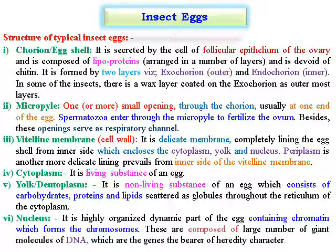The micropyle is a small opening through the chorion, usually at one end of the egg. Spermatozoa enter through the micropyle to fertilize the ovum; besides this, the opening also serves as a respiratory channel to the embryo. The vitelline membrane, that is the cell wall, is a delicate membrane completely lining the egg shell from the inner side, which encloses the cytoplasm.